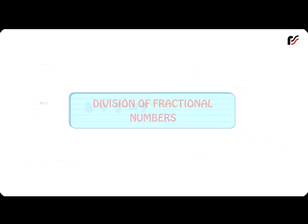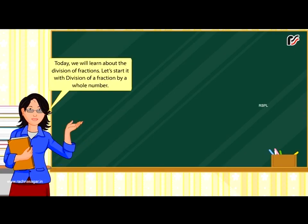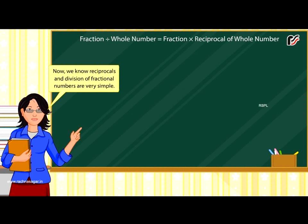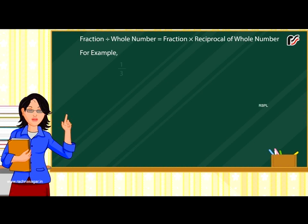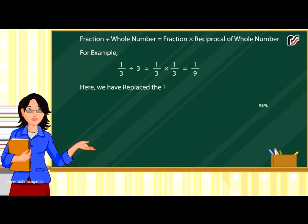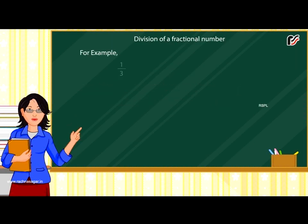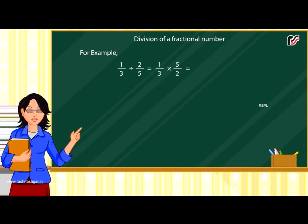Division of fractional numbers. Division of a fraction by a whole number: fraction divided by whole number equals fraction multiplied by the reciprocal of the whole number. For example, 1 by 3 divided by 3 equals 1 by 3 multiplied by 1 by 3, which equals 1 by 9. Here we replace the division symbol with multiplication and the whole number with its reciprocal. Division of a fractional number by a fraction: for example, 1 by 3 divided by 2 by 5 equals 1 by 3 multiplied by 5 by 2, which equals 5 by 6.